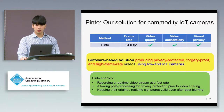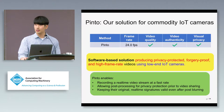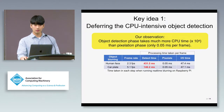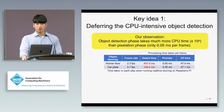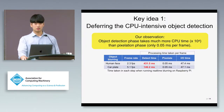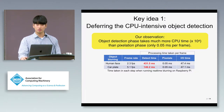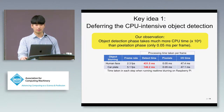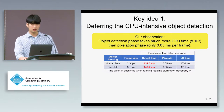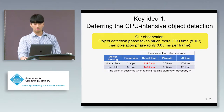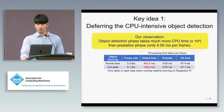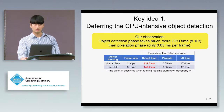To achieve this, Pinto leverages three key ideas. The first idea is to exploit computational asymmetry of object blurring, stemming from our observation in the previous real-time blurring experiment.